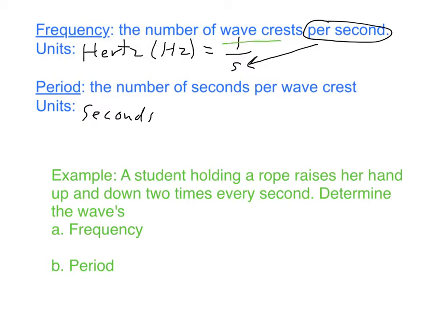To highlight the significance of what we're saying here: the number of wave crests per second versus the number of seconds per wave crest. They just switch places, and because of that we can express this in a mathematical equation. Frequency, symbol f, equals 1 over capital P for period.